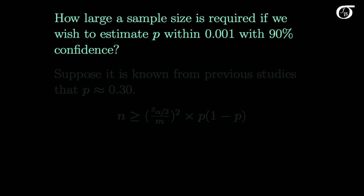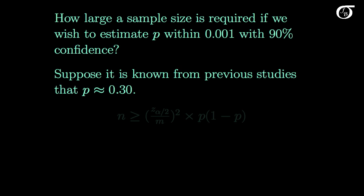Here's another example. How large a sample size is required if we wish to estimate P within 0.001 with 90% confidence? And let's change it a little this time and say suppose it is known from previous studies that P is approximately 0.30. In the previous example we had no estimate of P and we used the conservative approach. But here we have some idea that P is actually close to 0.3 from previous information.